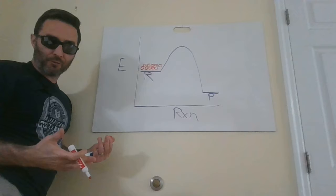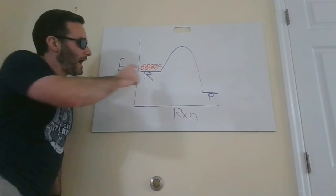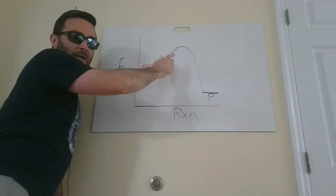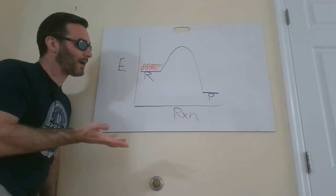So this is an exothermic reaction. And how do I know? My reactants start off with a higher potential energy. They get over the hump, and this hump is activation energy. So you have to give them some oomph in order for them to react.